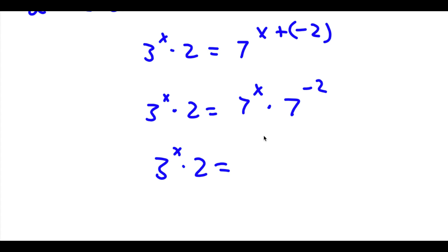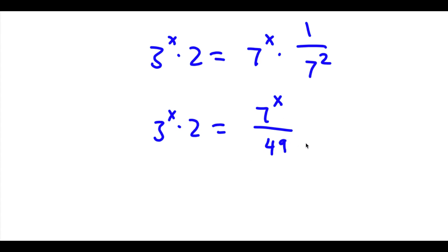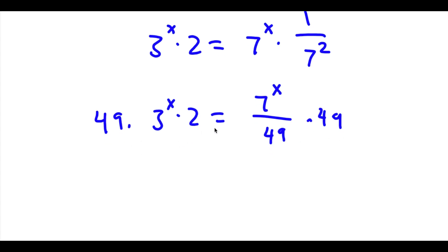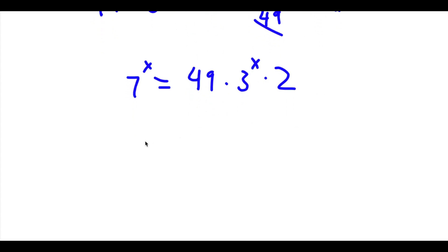Now, 7 to the power of negative 2 is the same thing as 1 over 7 to the power of 2, and 7 to the power of 2 is 49. So now I have 3 to the power of x times 2 equal to 7 to the power of x over 49. I can multiply both sides by 49, so these two cancel out and I'll be left with 7 to the power of x is equal to 49 times 3 to the power of x times 2. 49 times 2 is 98, so now I have 7 to the power of x is equal to 98 times 3 to the power of x.